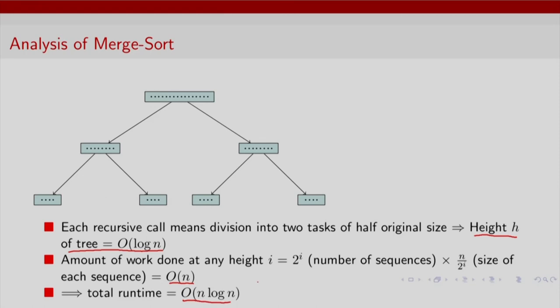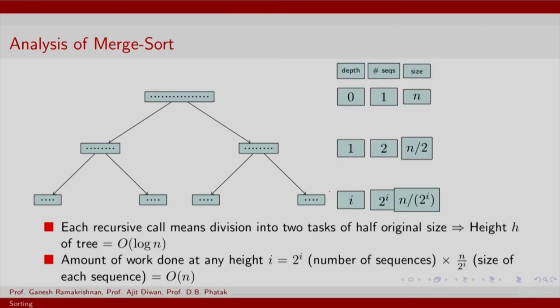Again, we have assumed that we have auxiliary space to store elements as we divide and merge. So this is assuming auxiliary or additional storage space. This we have illustrated.